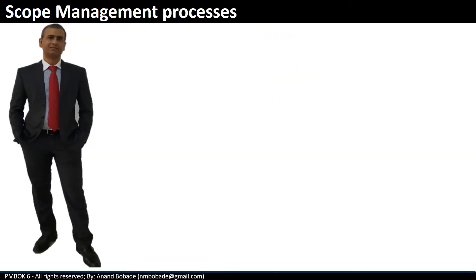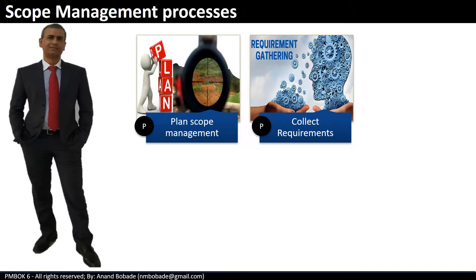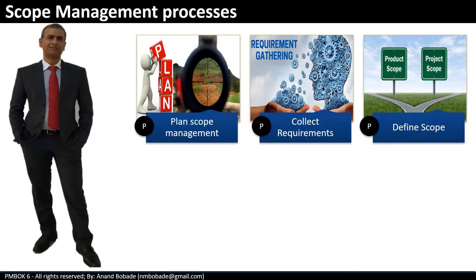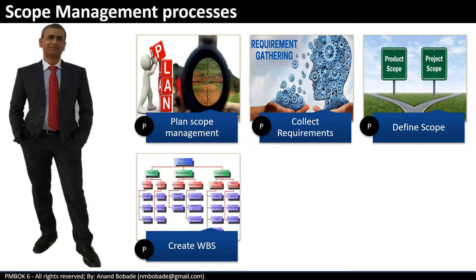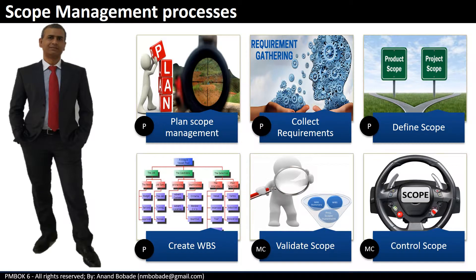Before getting into detail, let's have a quick look at all six processes. The first is plan scope management, second collect requirements, third define scope, fourth create work breakdown structure. These first four processes are part of the planning process group. Next we have validate scope and control scope, which are part of the monitoring and controlling process group.